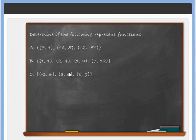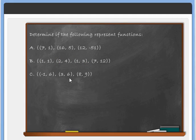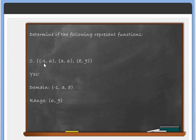For example c: (-1, 6), (3, 6), (8, 9). You might notice there are two 6s in the y coordinates, but that's okay. The rule is that each x can only be matched with one y — y values can repeat. Since each x appears only once, this is a function. The domain is {-1, 3, 8} and the range is {6, 9} — we only list 6 once.